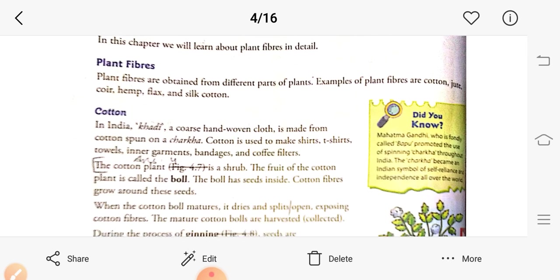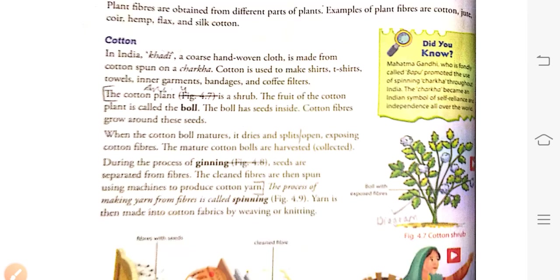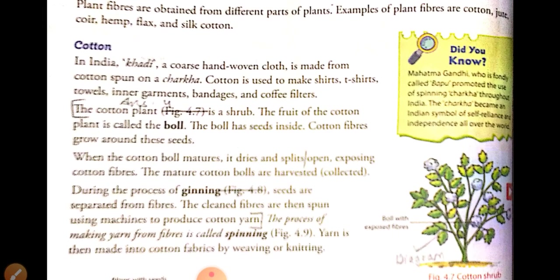First we will look at cotton. In India, khadi — a coarse hand-woven cloth — is made from cotton spun on a charkha. Gandhiji used to make his own clothes using the charkha. Khadi is a coarse hand-woven cloth made from cotton spun by hand.